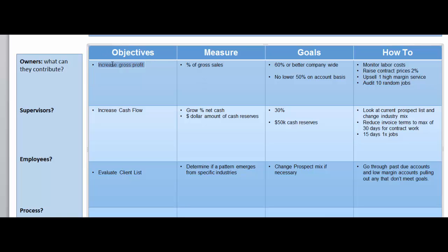Switching to strategy: I know I want to increase my gross profit. How am I going to measure it? I'm going to look at percentage of gross sales and create a goal. Some people like to set incremental goals — if your goal was 60%, maybe you'd start at 58%, then 59%, then 60%. Some people just want to set the big goal and get there piece by piece. So this is the goal, and then the most important part is the how-to — how am I going to do it?